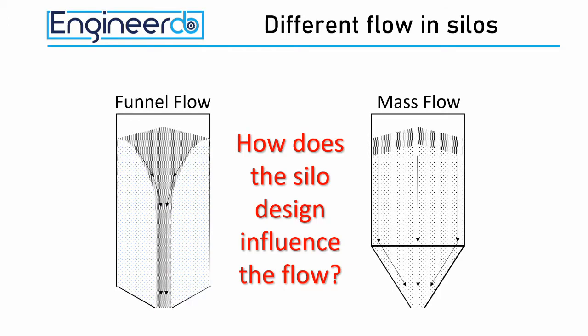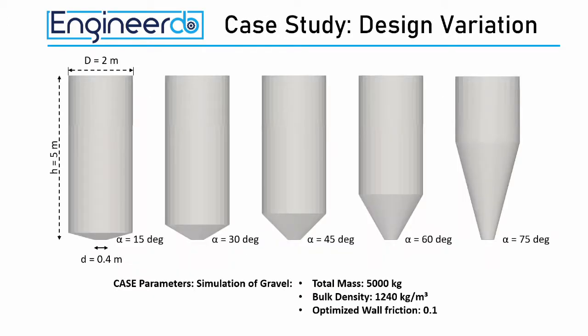To analyze and understand the behavior of the bulk material inside the silo in general, we designed a case study with different shapes of the silo bottom funnel. Each silo has a height of 5 meters and a diameter of 2 meters. The outlet in all cases has a diameter of 0.4 meters. From the left to the right the funnel angle is increased by 15 degrees each step.